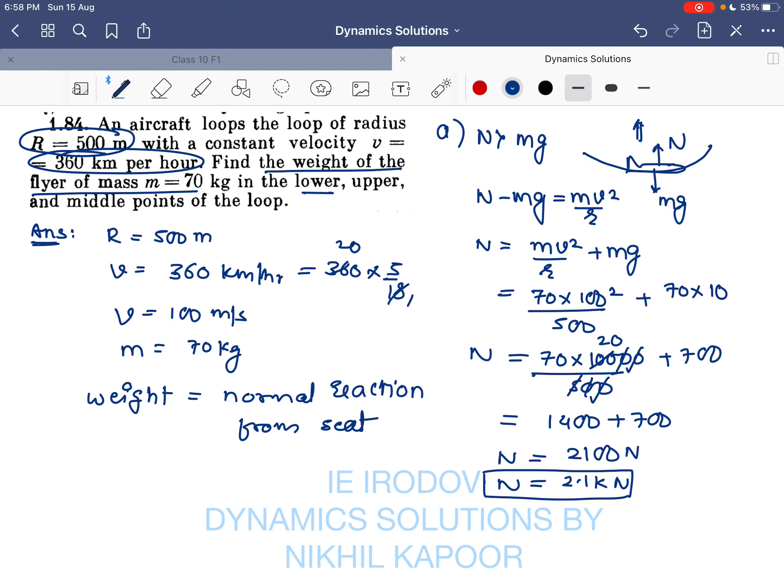Now in the second part, upper position. So when the flyer is passing through the upper position of the loop, in that case the weight is acting in the downward direction, the reaction from the seat is also acting in the downward direction. So both together will provide necessary centripetal force, so N + mg will provide mv² / r.